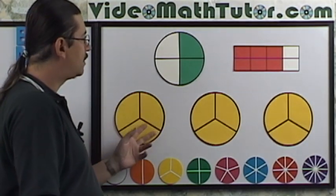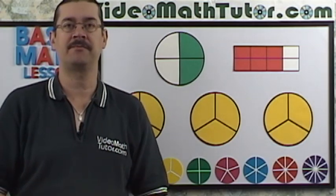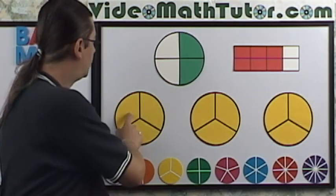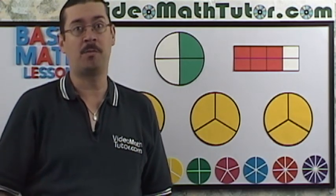Look at this right here. How many thirds are there in three whole parts? One, two, three, four, five, six, seven, eight, nine. There's nine thirds in three whole parts.